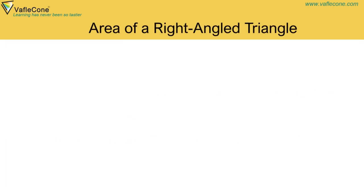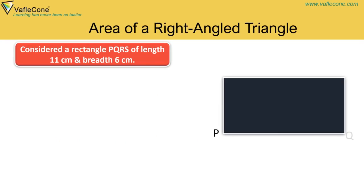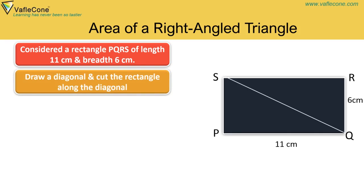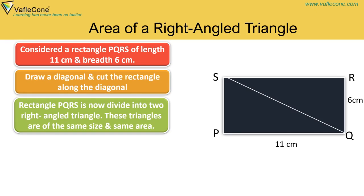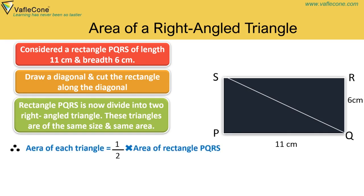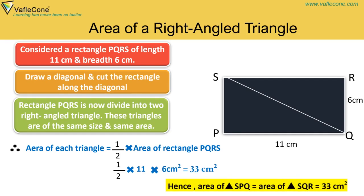Area of a right-angled triangle: Consider rectangle PQRS of length 11 cm and breadth 6 cm. Draw a diagonal and cut the rectangle along it. The rectangle is now divided into two right-angled triangles of the same size and area. Therefore, area of each triangle = 1/2 into area of rectangle PQRS = 1/2 into 11 into 6 cm² = 33 cm².